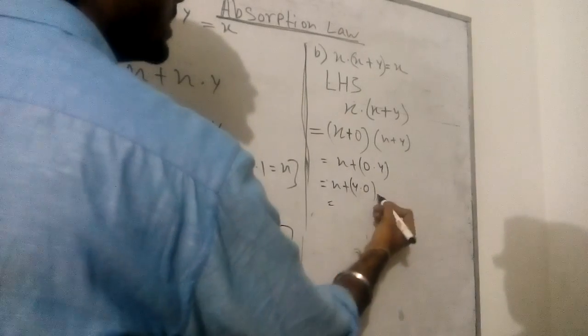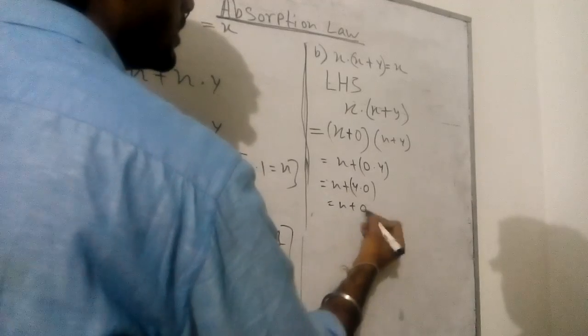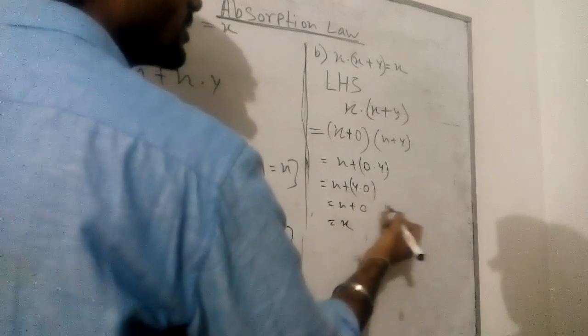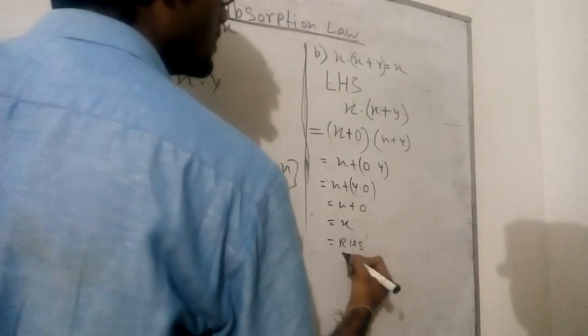So now something into 0 is 0, and x plus 0 is x. x into 0 is 0, x plus 0 is x. So our RHS is proved.